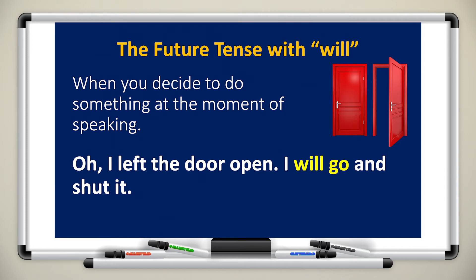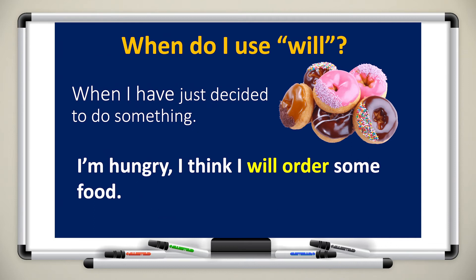For example, with the future tense using 'will': when you decide to do something at the moment of speaking, like 'Oh, I left the door open. I will go and shut it.' You decided to close the door at the moment of speaking, that's why you used 'will'. Pay attention — the verb coming after 'will' is always in the infinitive. Another example: 'I am hungry. I think I will order some food.' I felt hungry now and decided at the moment, that's why I used 'will' to express this future action.